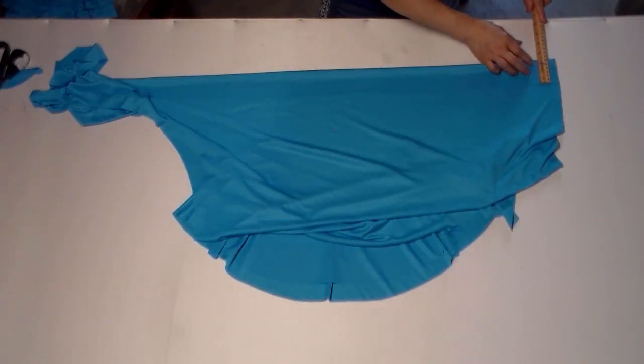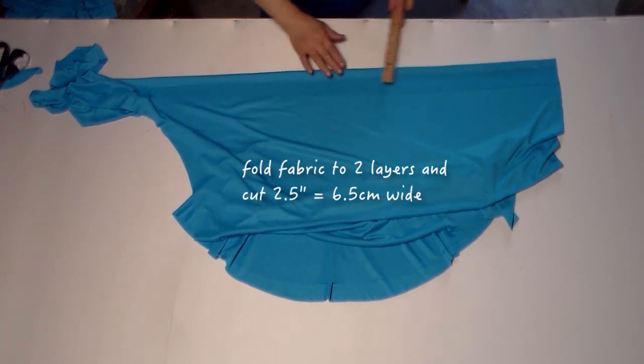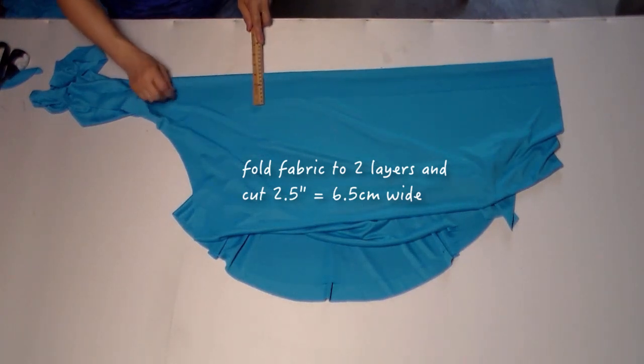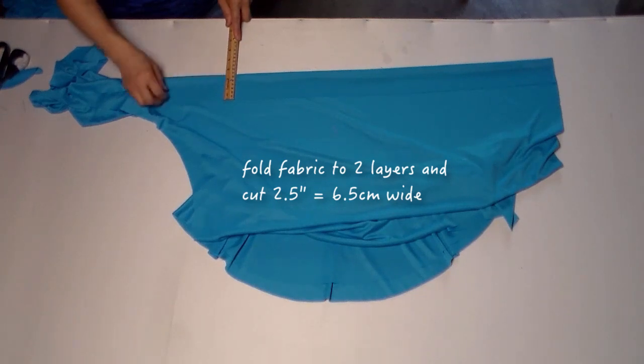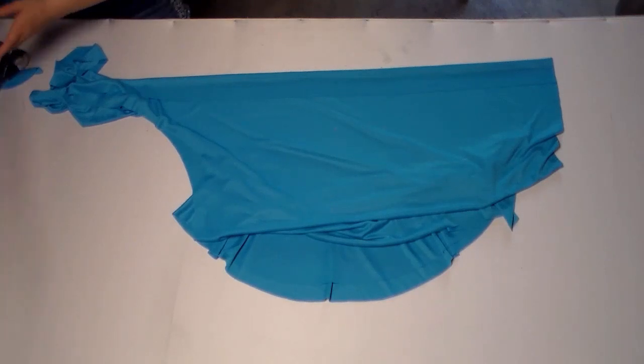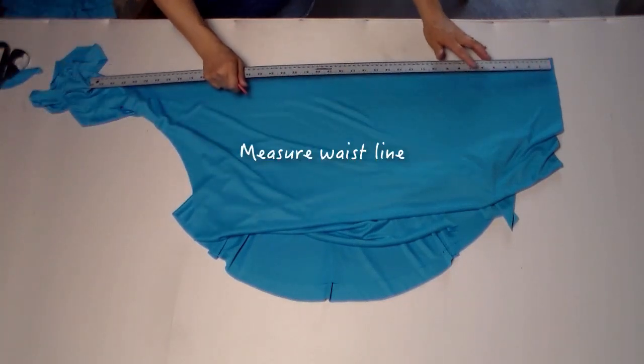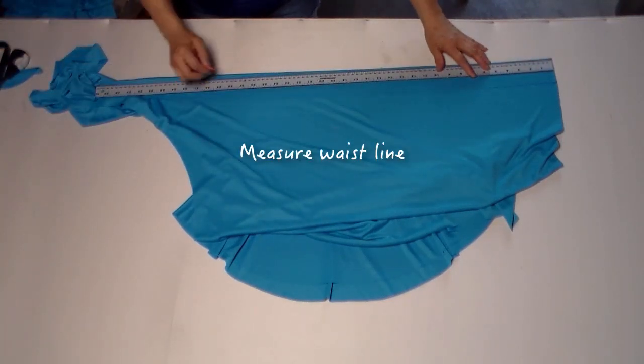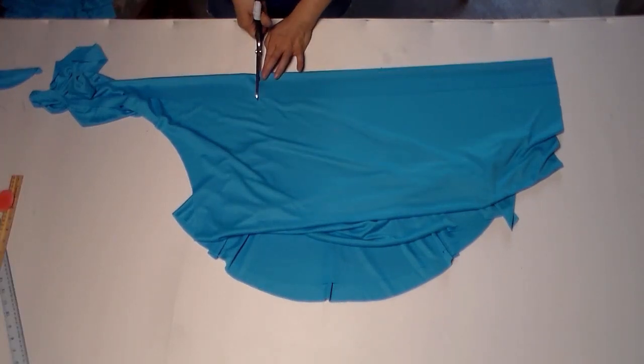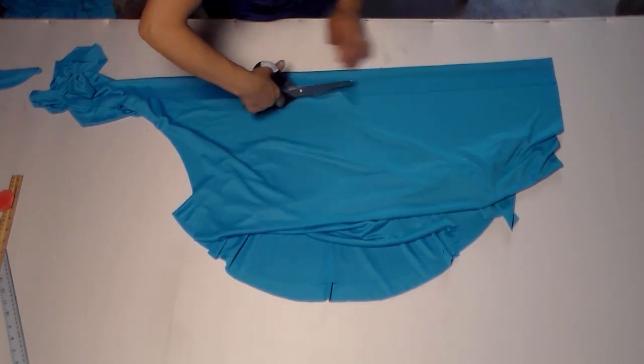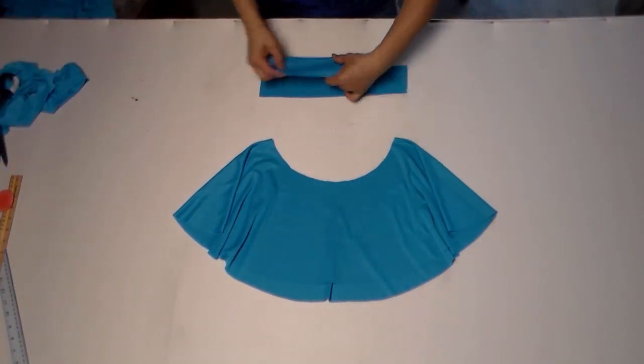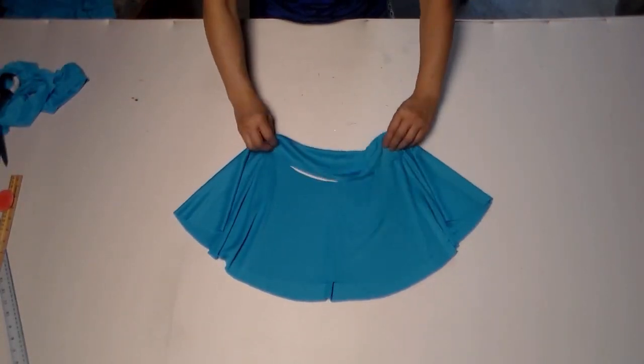Now we're going to make the waist part. Four fabric double layers, measured two and a half inches. That will include half inch sewing space. Measure your waist line and sew this piece together.